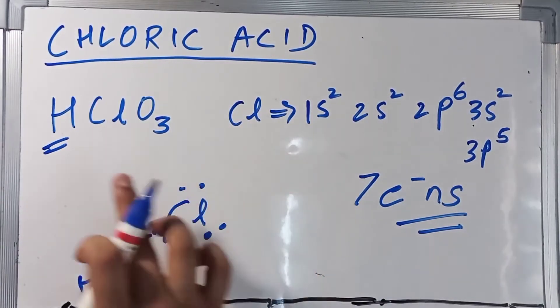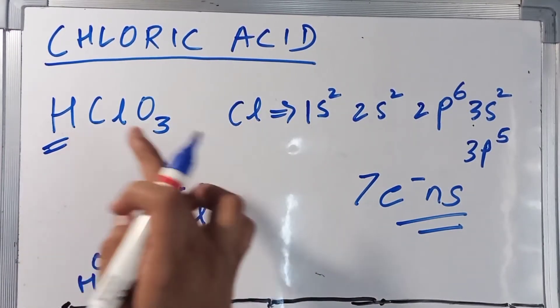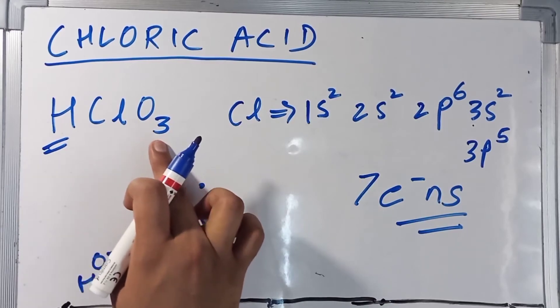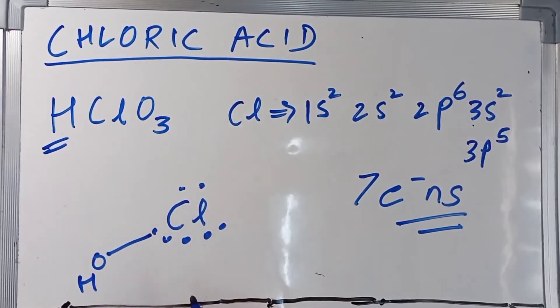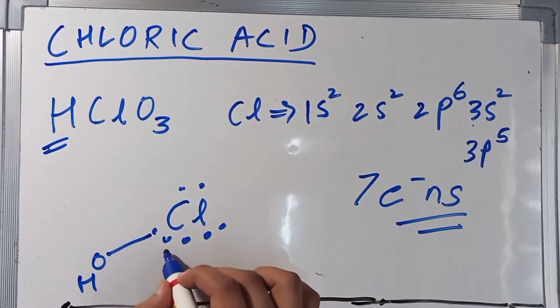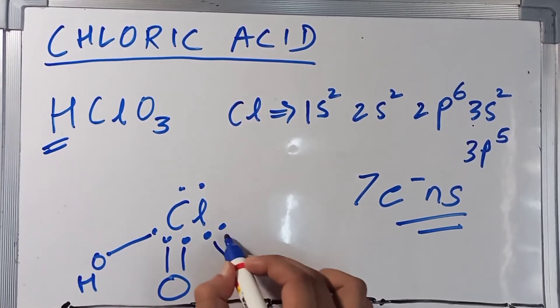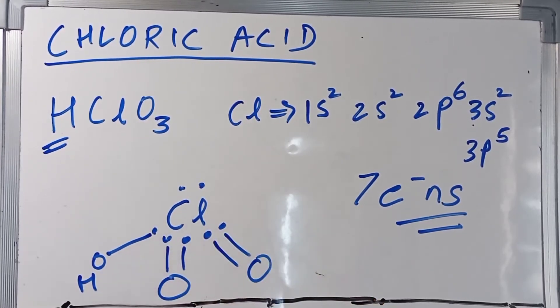Now, we have used our H and we have used an oxygen also, so we are now left with 2 oxygens. Second oxygen, third oxygen. Now, this was a very rough diagram.